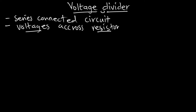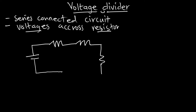Now let's look at a circuit. This circuit has resistors R1, R2, and R3, and a voltage source VT. This is series connected. We know that the total voltage is going to be the voltage drop across resistor 1, resistor 2, and resistor 3.